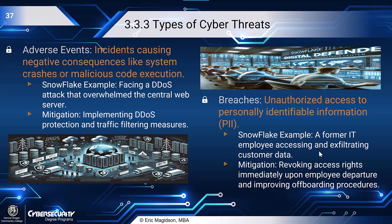A breach can happen at the physical level. Somebody breaks in, gets into an area where only authorized personnel are allowed and does some damage — they've breached that perimeter. Our Snowflake example is a former IT employee, an insider threat, accessing and exfiltrating customer data. Former, meaning they've left the company — somebody should have shut off their credentials, and made sure an IT person didn't have a backdoor.